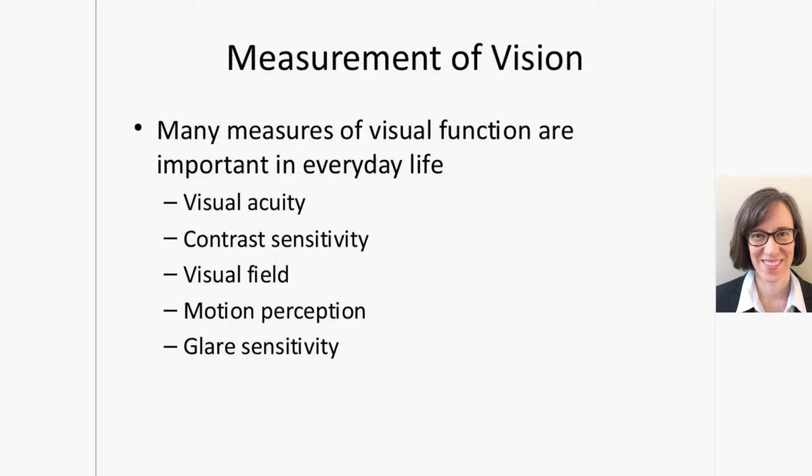When we talk about vision, there's no single measure. In fact, there are multiple measures of visual function. The measure I'm going to focus on today is visual acuity, which is a measure of how sharply you can see things — the resolving power of your visual system. There are many other measures of visual function that are also important. Typically in epidemiological studies, if we measure anything, we measure acuity and sometimes other things as well.